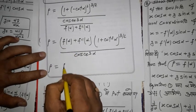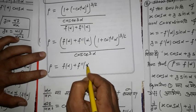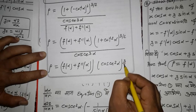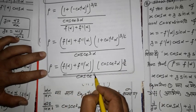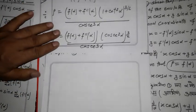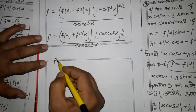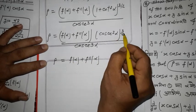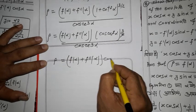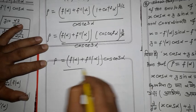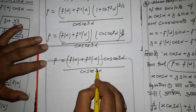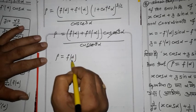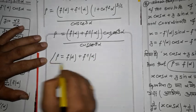Substituting y₁ = -cot α and y₂ = -cosec³α / [f(α) + f''(α)] into ρ = (1 + y₁²)^(3/2) / |y₂|: numerator = (1 + cot²α)^(3/2) = cosec³α. Dividing by cosec³α / [f(α) + f''(α)], the cosec³α terms cancel, giving ρ = f(α) + f''(α). Hence proved.